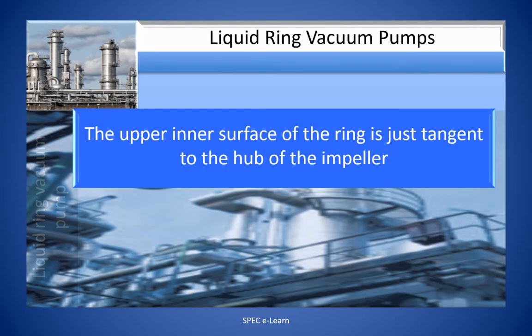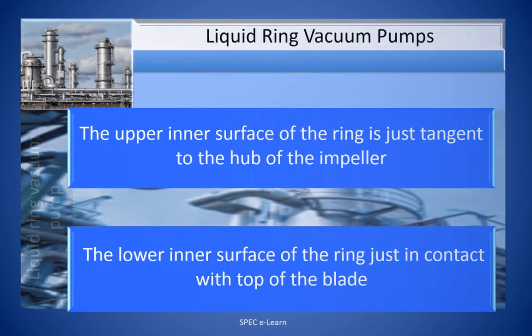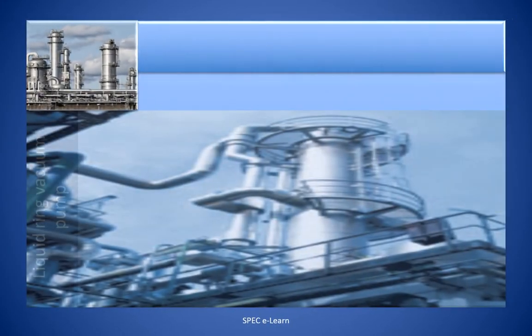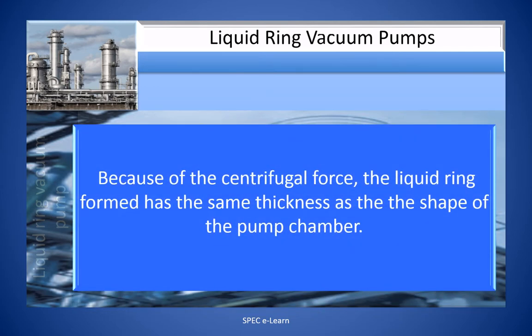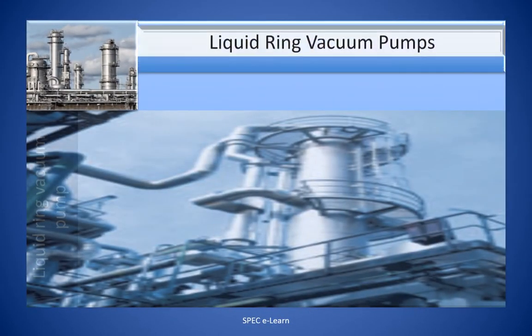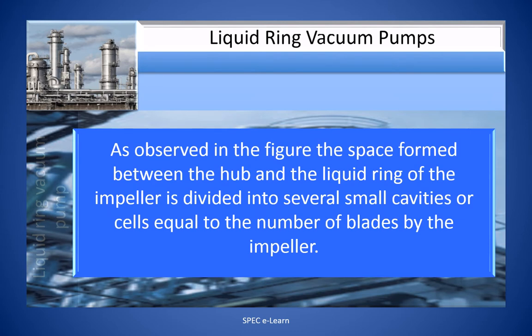The upper inner surface of the ring is just tangent to the hub of the impeller. The lower inner surface of the ring is just in contact with the top of the blade. Because of the centrifugal force, the liquid ring formed has the same thickness as the shape of the pump chamber. The space formed between the hub and the liquid ring is divided into several small cavities or cells, equal to the number of blades in the impeller.